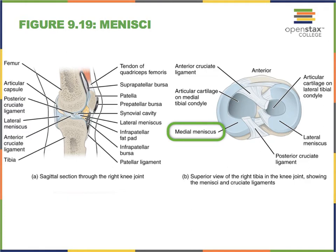We talk about the medial meniscus—because the tibia, the shin bone, sits medially—and the lateral meniscus. And notice the crossing of the various ligaments, the ACL and the PCL, which also provides stability to our knee joint.